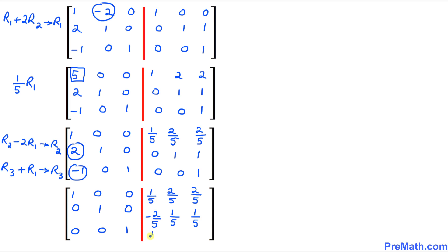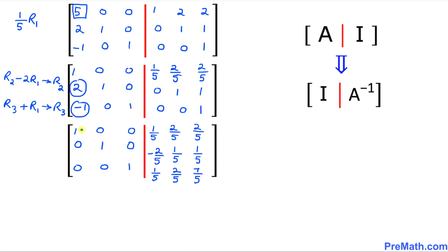this one is going to become 1 over 5, 2 over 5, and that's going to become 7 over 5. So thus, our left hand side, this matrix has been transformed into an identity matrix. As you can see, if this becomes identity, then the right hand side matrix is A inverse, A power negative 1.